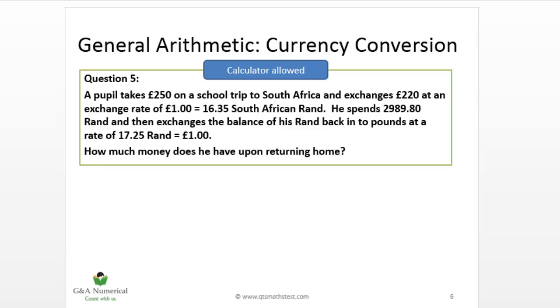Question 5. We've got a pupil who takes 250 pounds on a school trip to South Africa. He exchanges 220 pounds at an exchange rate of one pound equals 16.35 rand. He spends 2,989.80 rand and then exchanges the balance of the rand back into pounds at a rate of 17.25 rand to the pound. So how much money does he have upon returning home? Probably it's a good idea with these wordy questions to read the last sentence first, so the one with the question mark, and then read all this stuff because that might make you engage with the question a bit quicker.